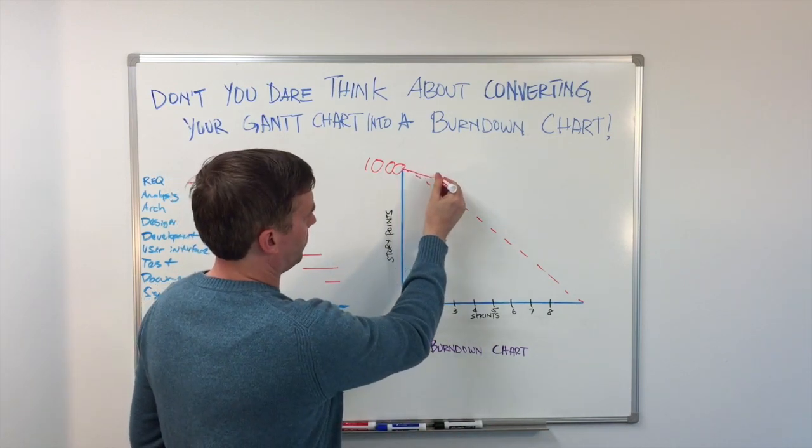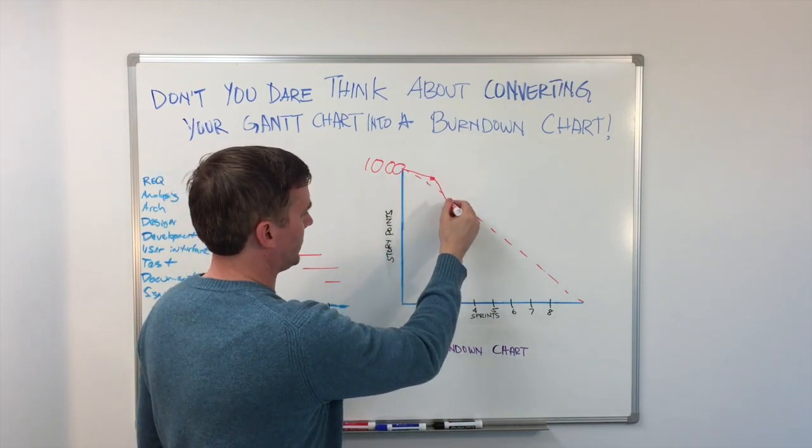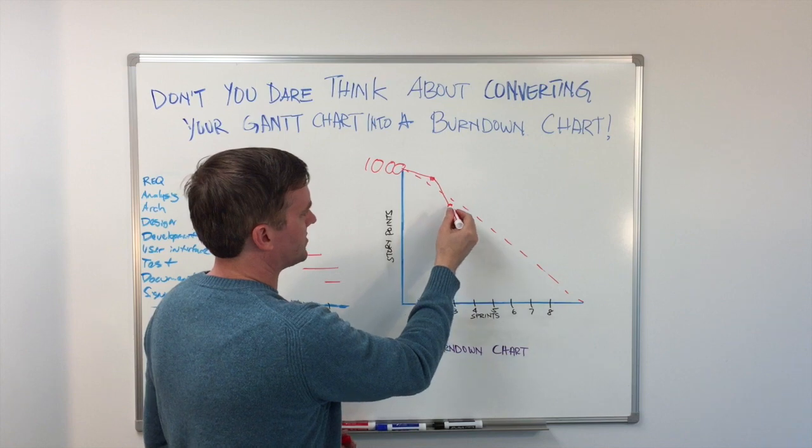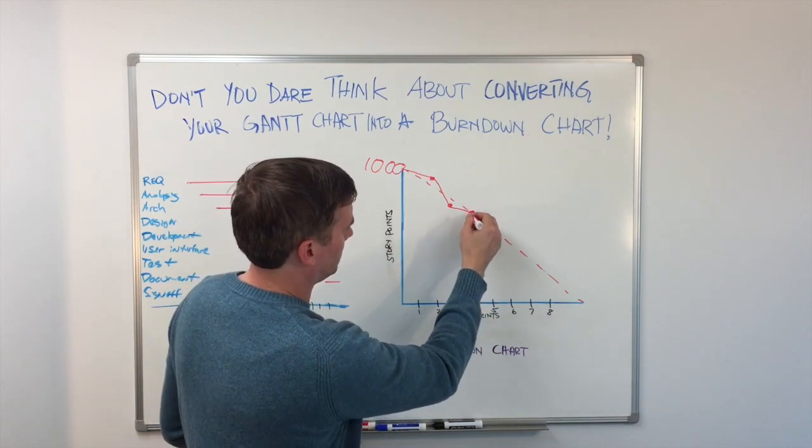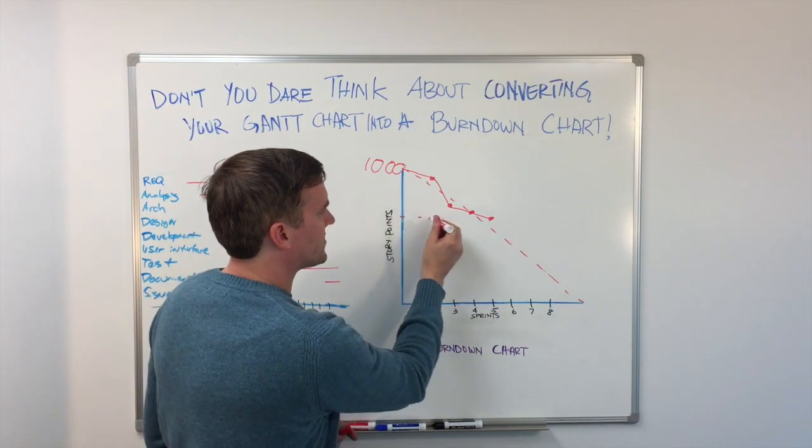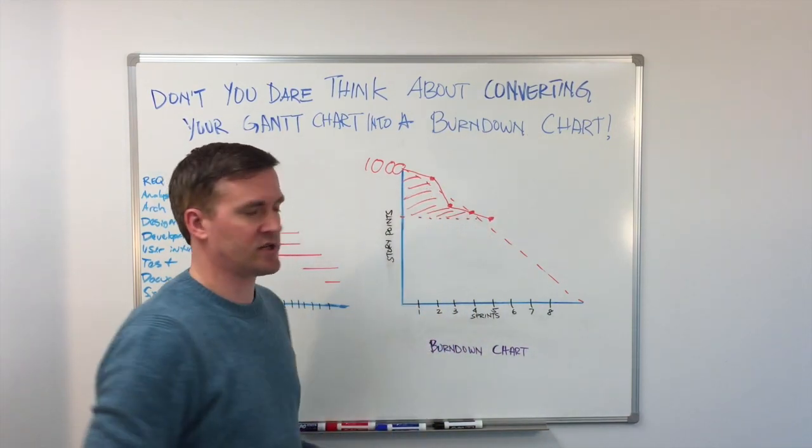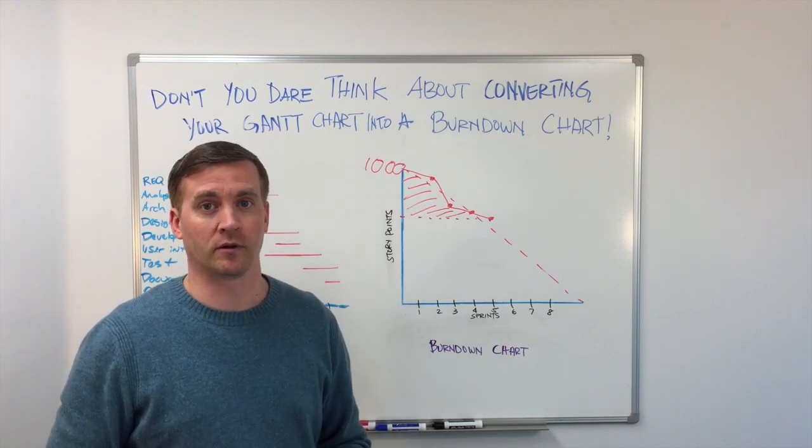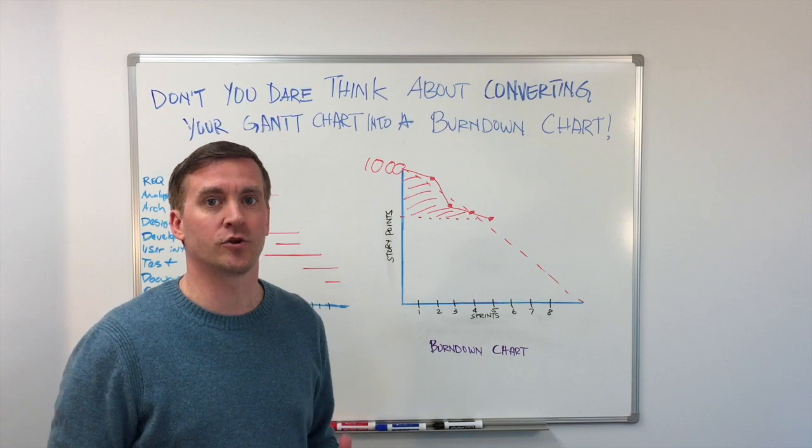So in real life, if after sprint one we completed this much work here, and after sprint two we completed about that much work, and sprint three we finished out to here, sprint four, all of this work you see here is finished, it's ready to go, it's shippable, you can use it. Whether or not you ship it is up to you, but the point is you could use it.